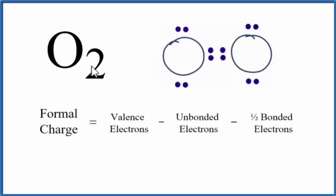To find the formal charge for each oxygen in O2, we'll use this Lewis structure and this formula.